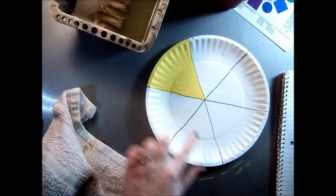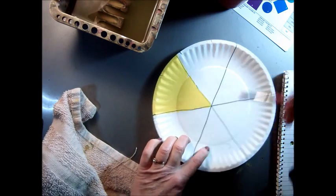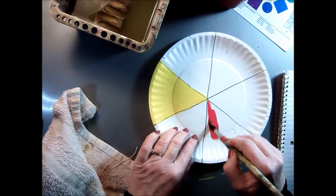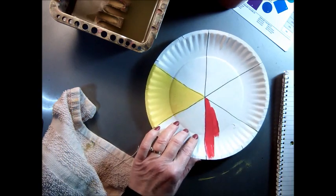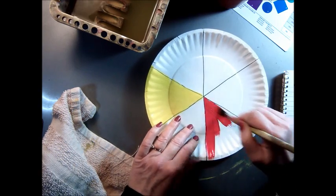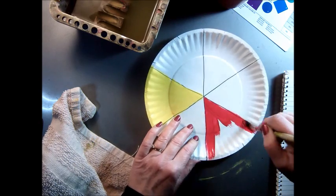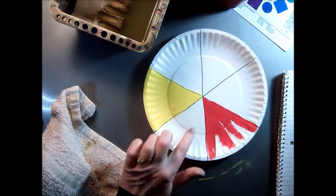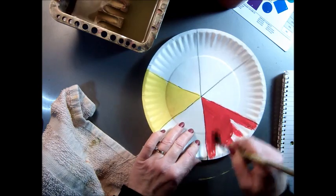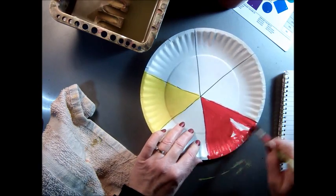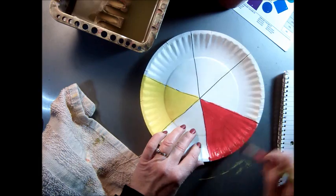Now I'm going to skip one and put the red here. I could put it there, but it doesn't really matter the order as long as you skip a slice of the color wheel so that we can put our secondary colors here. The primaries, we call this a triad because it's like a triangle the way it's arranged.